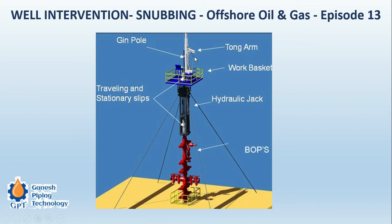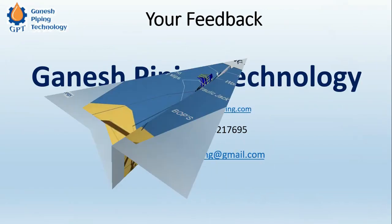You can see here the snubbing unit comes with all these detailed assemblies. They can be fitted on the production tree, and this is the hydraulic jack. These are all the accessories that come with it, and it also comes with a blowout preventer. That is all about today's video on snubbing.